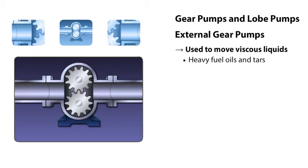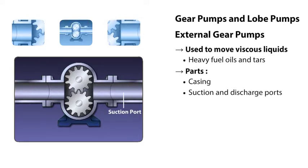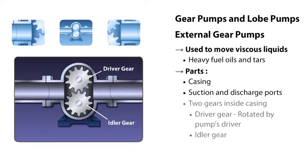Let's look at gear pumps first. One of the more common types is an external gear pump. The external gear pump shown in this illustration consists of a casing with a suction port, a discharge port, and two gears located inside the casing.